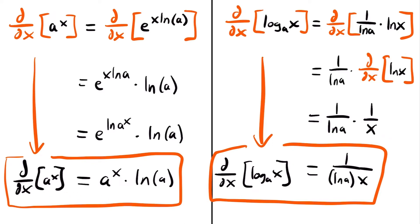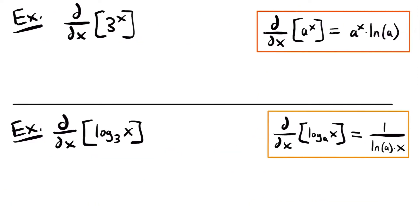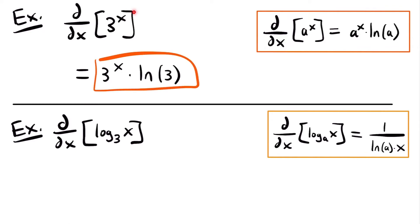Now that we know these derivative rules and where they come from, let's look at some examples. Our first example: the derivative of 3 to the power of x. The derivative of an exponential function with base a is a to the power of x times the natural log of a. Here a equals 3, so the derivative equals 3 to the power of x times the natural log of 3. We rewrite the original function and multiply by the natural log of 3.